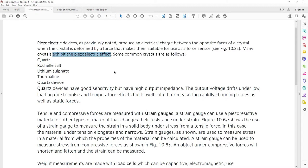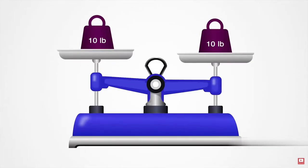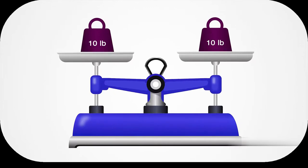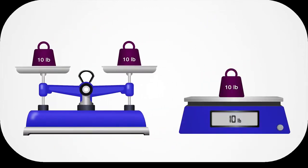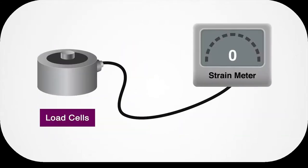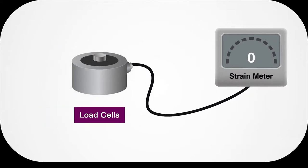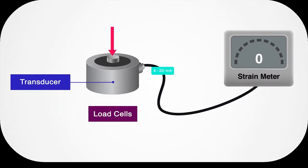Now we have methods that measure weight automatically. The first thing we need to know about a load cell is its definition. A load cell is a force gauge that consists of a transducer used to create an electrical signal whose magnitude is directly proportional to the force being measured.